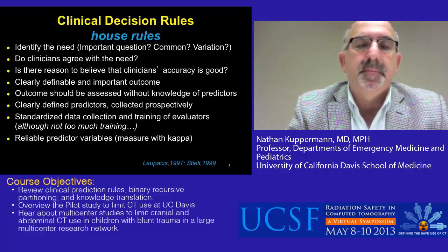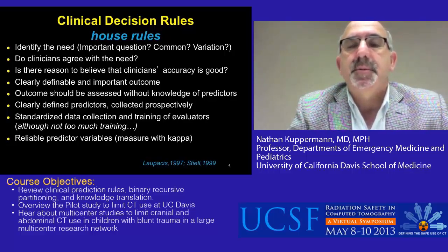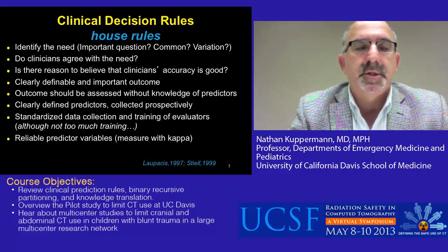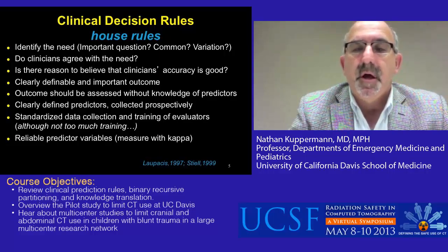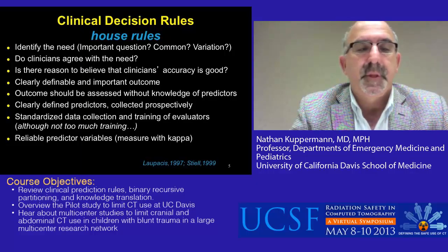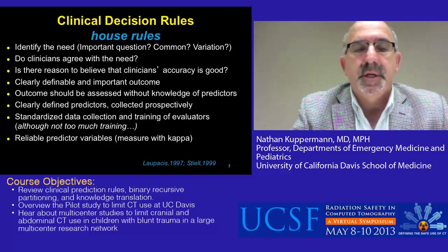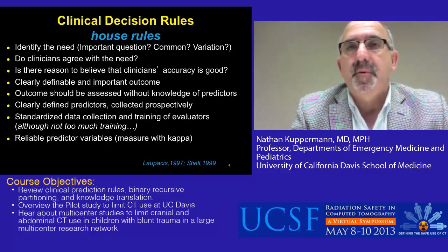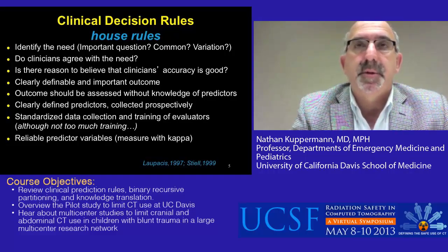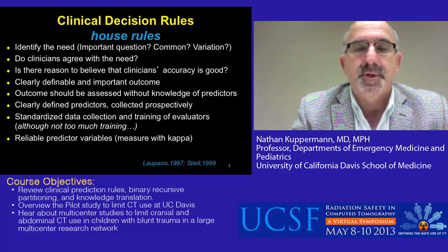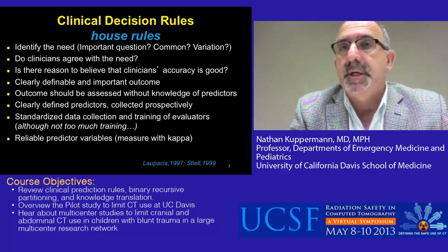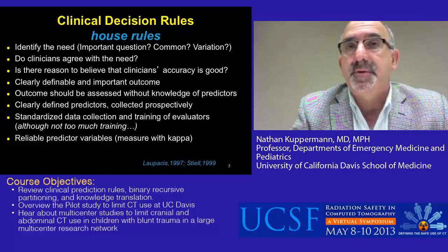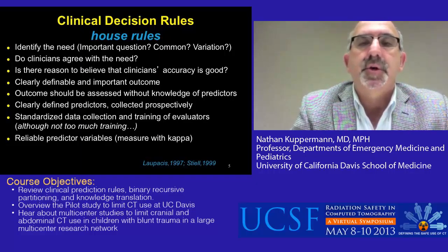You need a clearly identifiable and important outcome. The outcome should be assessed without knowledge of the predictors, to avoid bias in collection of the outcome. Similarly, you need clearly defined predictors that are collected prospectively, also blinded to the outcome variable. There has to be standardized data collection and training of evaluators. However, you shouldn't train the evaluators with too much detail, because at some point you're going to want this clinical decision rule to be broadly generalizable in practice, and clinicians out there will not have received the same training as your investigators. We measure predictor variables with a kappa correlation coefficient — we want to use variables with good inter-observer reliability, because if two clinicians can't agree on the presence or absence of a particular predictor, then one can't use that in the construction of a clinical decision rule.